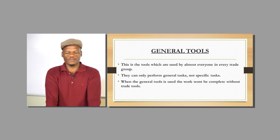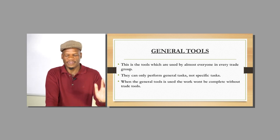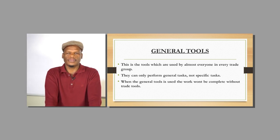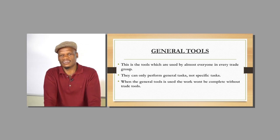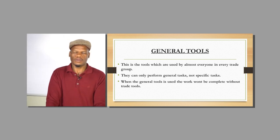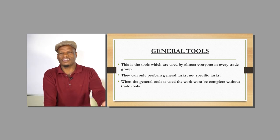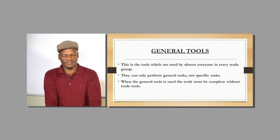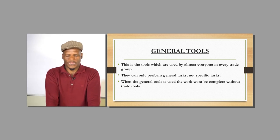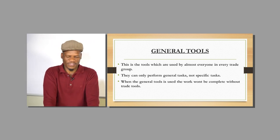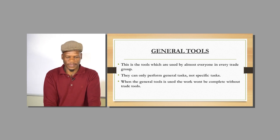General tools are those which are going to be used by most of all the trades. They can only do general tasks and cannot be specified to any one trade. For example, a screwdriver — most people will need it: a carpenter, a mechanic, all those kinds of people. But a tile cutter can only be used by a tiler, so that type of tool is not going to fall under the general tools.